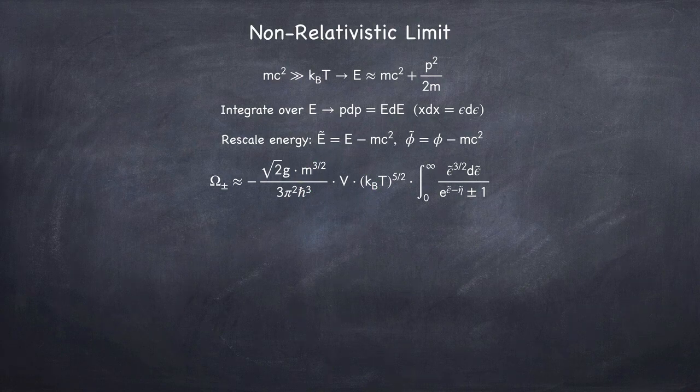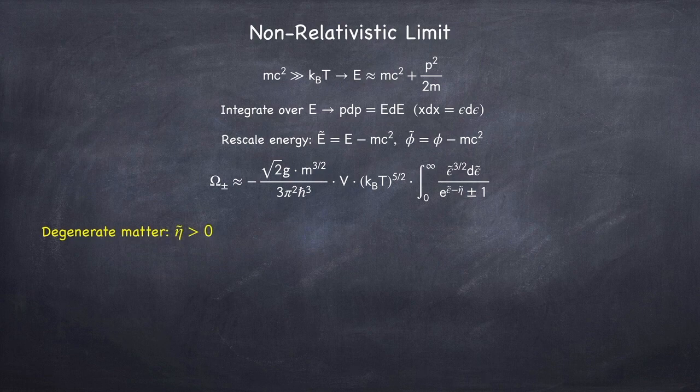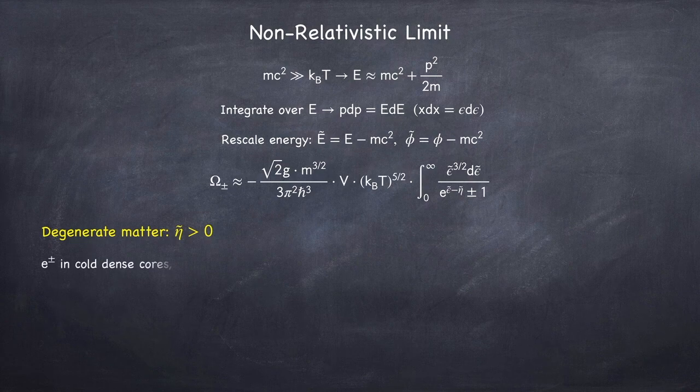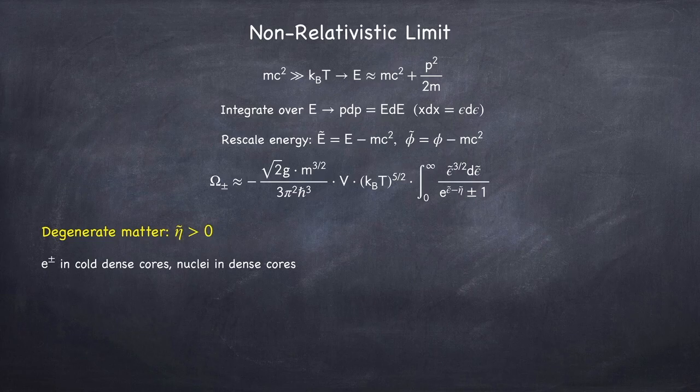So let's see what happens with degenerate matter. We're now going to define degenerate matter as eta tilde being greater than zero rather than eta, because that's what shows up here in the integral.